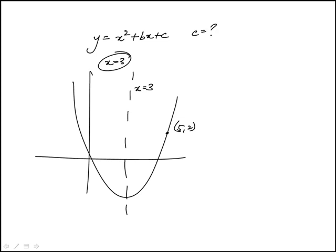So the axis of symmetry, we know it passes through (5, 2), x equals 3. So one thing I already know, the axis of symmetry is related to the coefficients here. So it's minus b over 2a. a here is 1. So I can find what b is, b is minus 6.